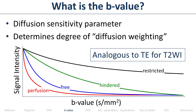What is the B value? These curves resemble T2 relaxation curves, but the x-axis now shows the B value rather than echo time. The B value is analogous to echo time for T2-weighted imaging. On diffusion-weighted imaging, the B value is the diffusion sensitivity parameter — a single number that tells you how diffusion-weighted your images are. A B value of 10 means weakly diffusion-weighted; a B value of 1000 means heavily diffusion-weighted. B value has units of seconds per millimeter squared.